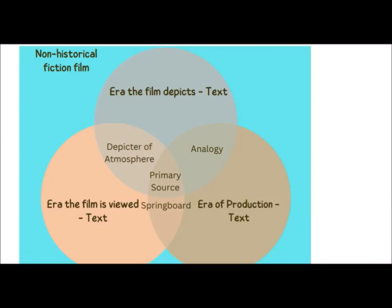An interesting question comes up when we start dealing with non-historical fiction film. When you have non-historical fiction, you still have the time period in which the film is being viewed and the era in which the film is being produced — those do not change. But the era in which the film depicts is different: what if this is not a true story? How can this be a depiction of a particular time period? This is where we shift from discussing historiography to an analogy.